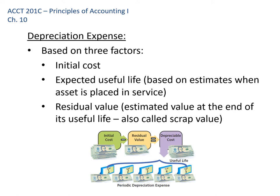Depreciation expense is based on three factors: the initial cost — which includes everything to get it to your business ready to go — how long we think we're going to use the asset, and the residual or scrap value, meaning how much it will be worth at the end of its life. To determine depreciation, we take the initial cost minus the scrap value — that's the depreciable cost — then divide by the number of years of useful life to get annual depreciation expense. When we record depreciation expense, we increase the contra account, accumulated depreciation, which serves as an offset to the value of the asset.